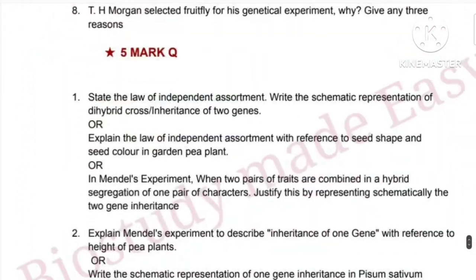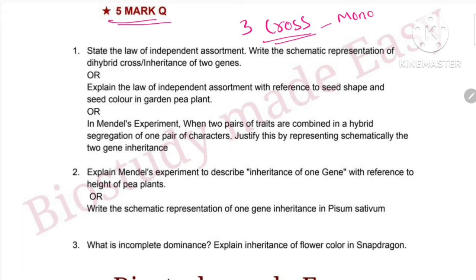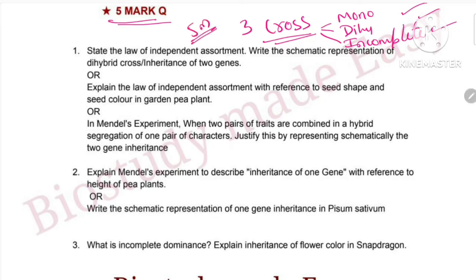First, I will tell you about the 5-mark questions, because they are very important and fixed questions. In this chapter for 5 marks, I will also tell you about the 3-mark questions. There are 3-mark topics: one is monohybrid cross, one is dihybrid cross, and one is incomplete dominance.